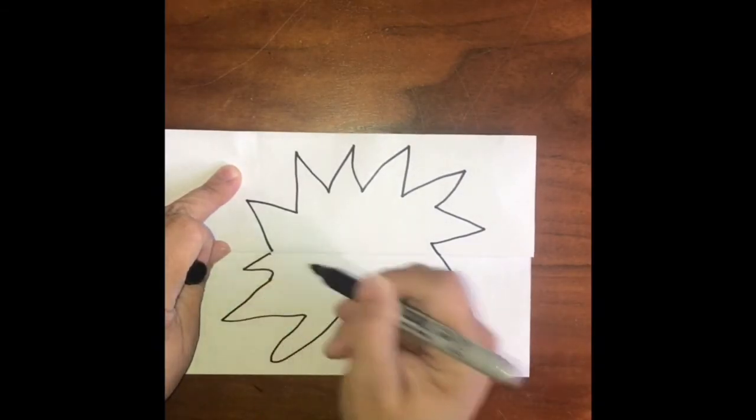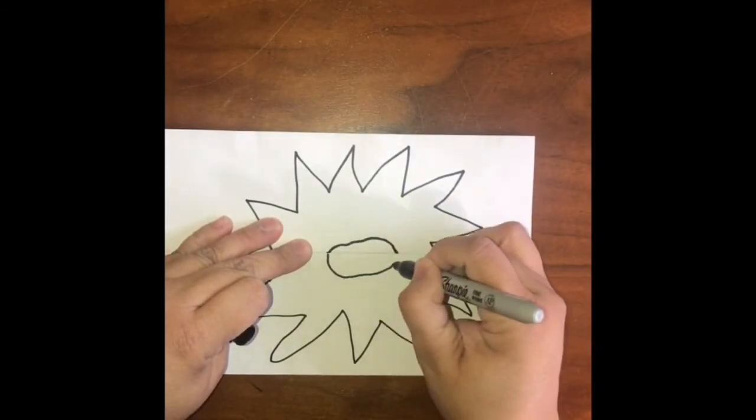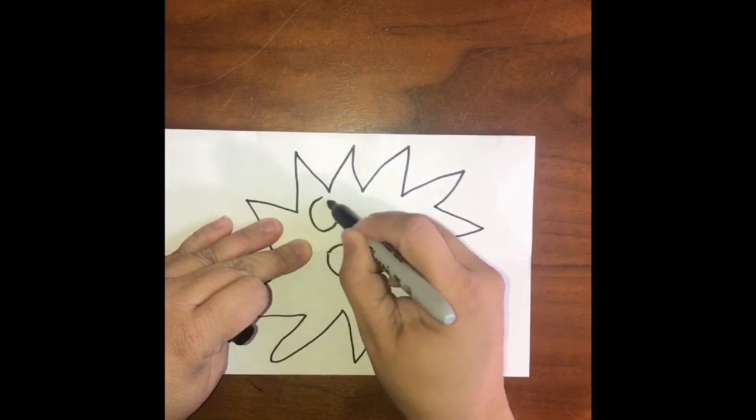After you draw your shape, you want to start with the mouth. Draw the top part of the mouth on the top side of the fold and the bottom on the other side of the fold.